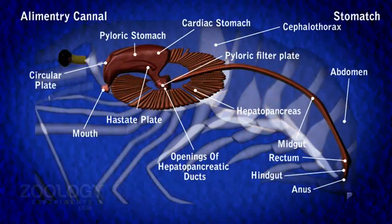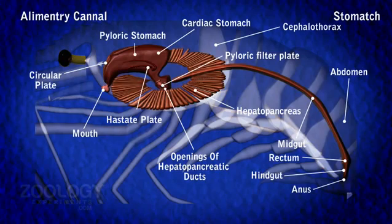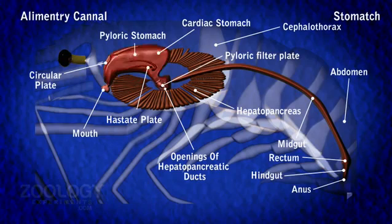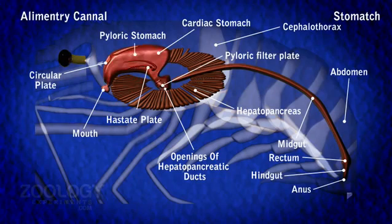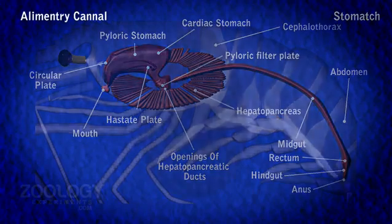The stomach occupies most of the cephalothoracic cavity. It remains buried laterally, ventrally, and posteriorly in the hepatopancreas. The stomach is thin-walled and double-chambered, consisting of two parts: a large anterior bag-like cardiac stomach and a much smaller posterior pyloric stomach.